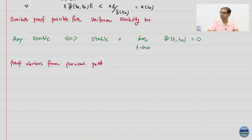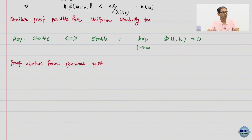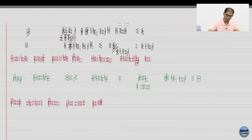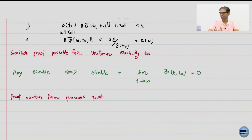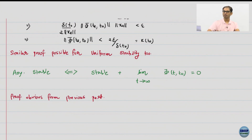From next time we will start talking about Lyapunov theorems — the crux of how to analyze stability for nonlinear systems without actually solving the system. Even for linear systems, claiming norm of phi is less than or equal to K is virtually impossible without solving the system. Lyapunov theorems are essential for nonlinear systems; linearization methods are restrictive as they do not give a basin of attraction.